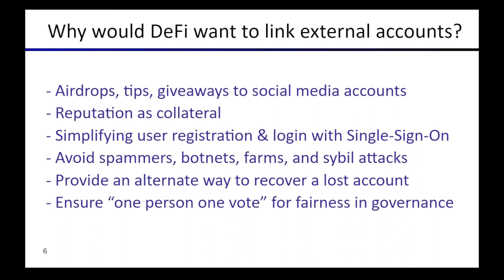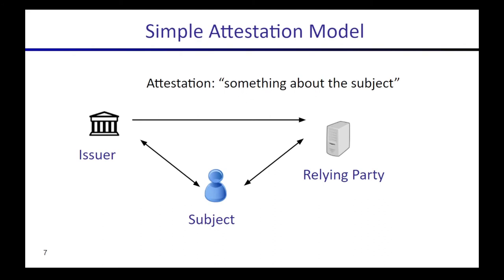We'll go over these application ideas in more detail throughout the rest of the lecture. Before getting too much further into the interesting technical and security questions, I want to introduce some common terminology we'll use throughout this lecture — the roles involved in an attestation model. The idea is that there's a subject, typically a user; an issuer who is the identity provider or account provider serving as some kind of authority; and a relying party who listens to the issuer, receives an attestation, and learns something about the subject before interacting with them.